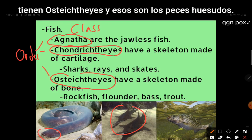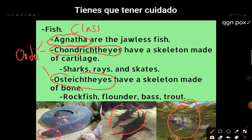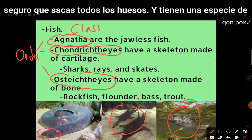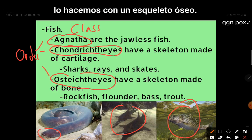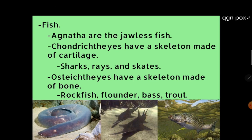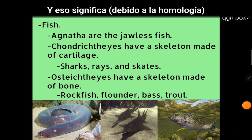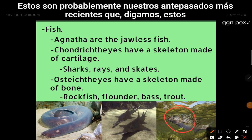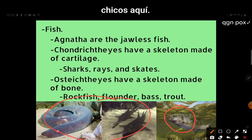Then we have osteichthyes — the bony fish. You have to be careful when you fillet them to make sure you get all the bones out. They have sort of the same bony skeleton arrangement we do, which means due to homology, these are probably our more recent ancestors than the jawless fish.